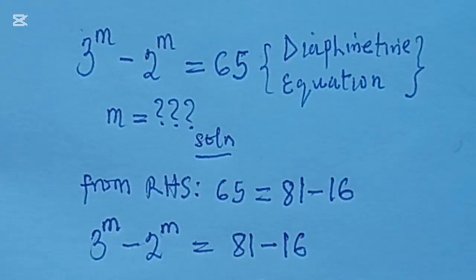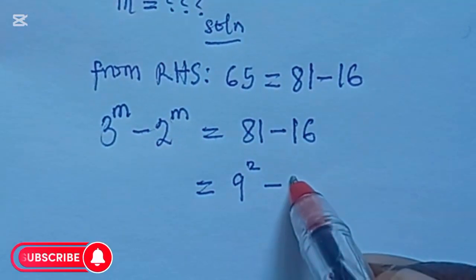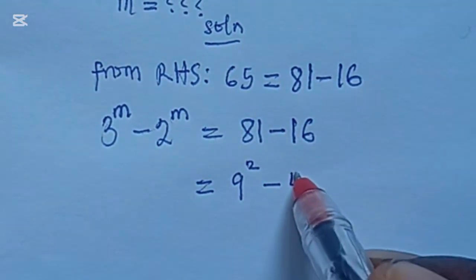If you look very closely, you will see that 81 can be expressed as 9 squared minus 4 squared, alright?